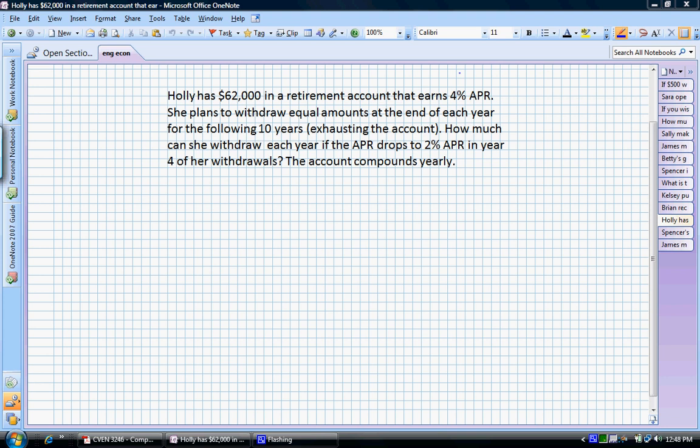In this problem, we have Holly, who has a retirement account with a balance of $62,000 in it. That account continues to earn 4% APR. What she plans to do is withdraw equal amounts at the end of each year for the following 10 years, exhausting the account.